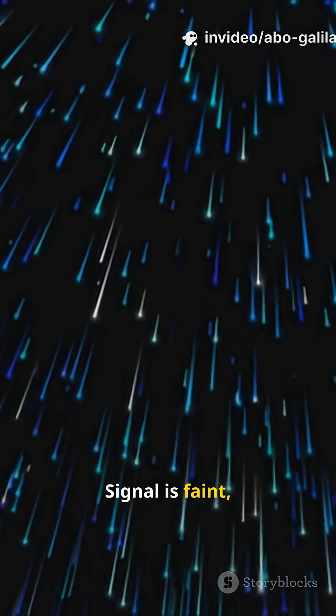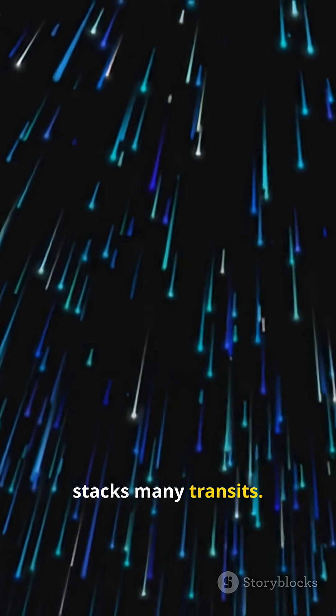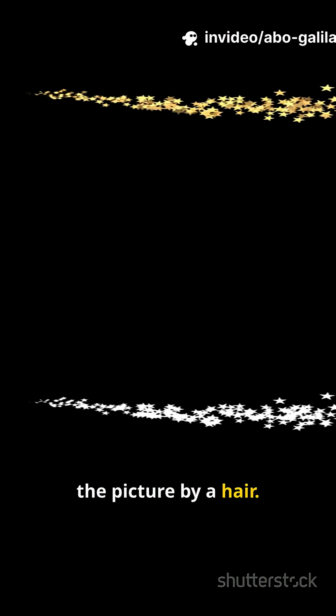Signal is faint, noisy and fragile, so Webb stacks many transits. Each pass sharpens the picture by a hair.